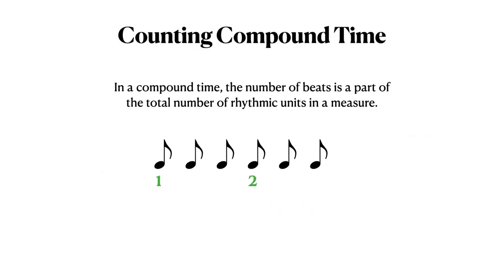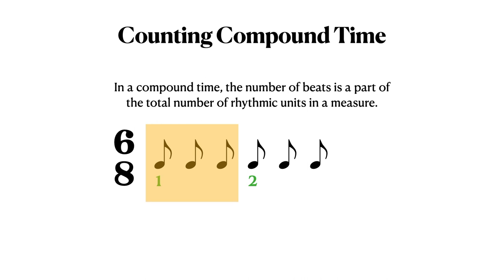In a compound time such as this, the number of beats is a part of the total number of rhythmic units in a measure. Here there are 6 rhythmic units — the 8th note — but the number of beats is 2. When counting a rhythm in a compound time signature, it is important to first identify the beats. Here is the first beat grouping of the measure: 3 8th notes. When counting a rhythm, the first part of a beat grouping is a number, the 2nd third we will call 'la', and the 3rd third we will call 'li'.